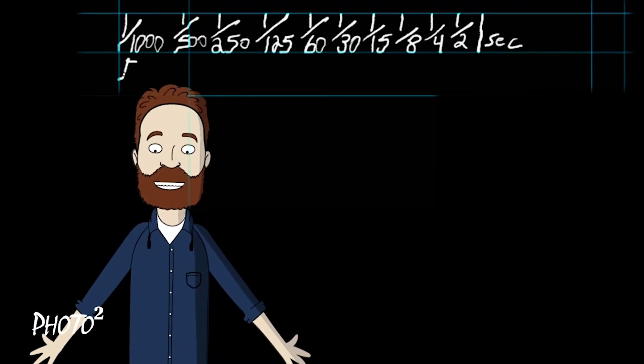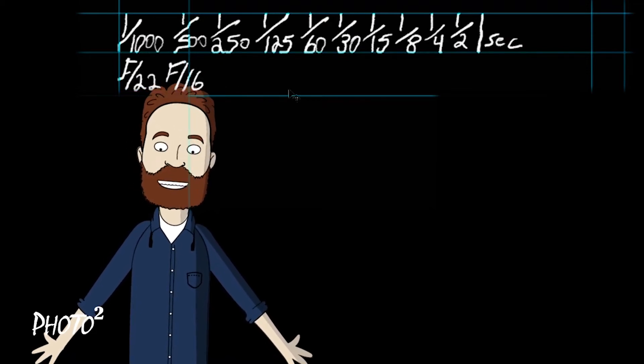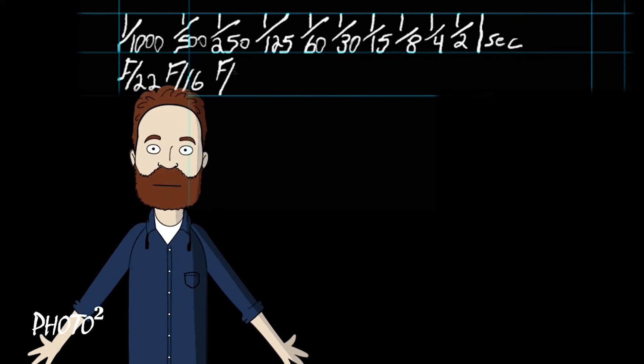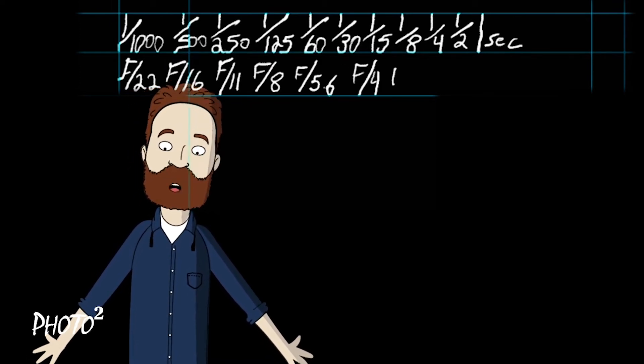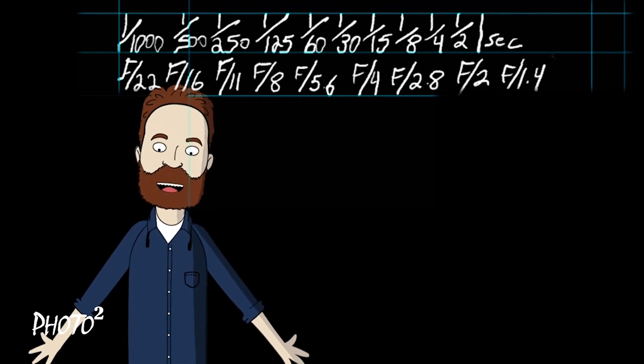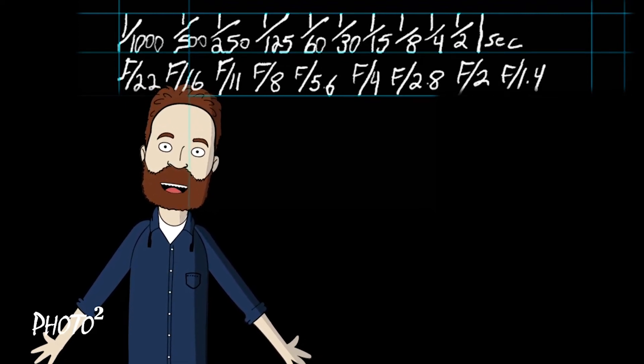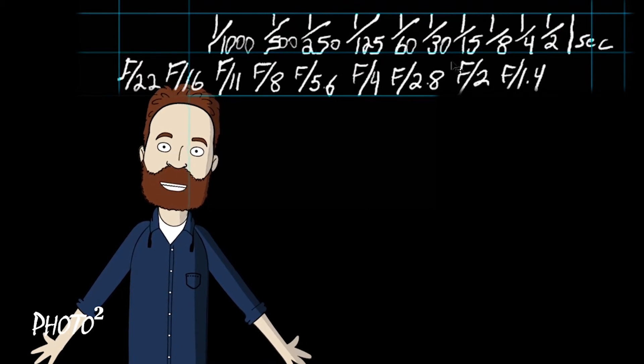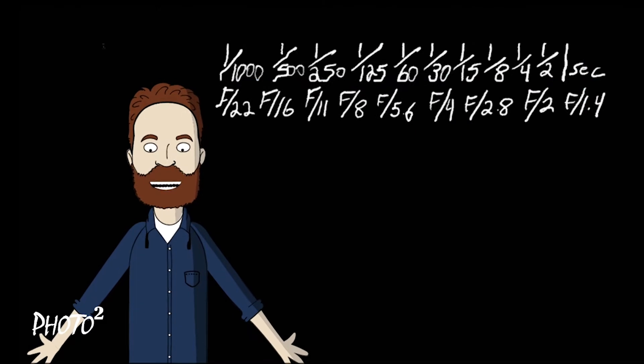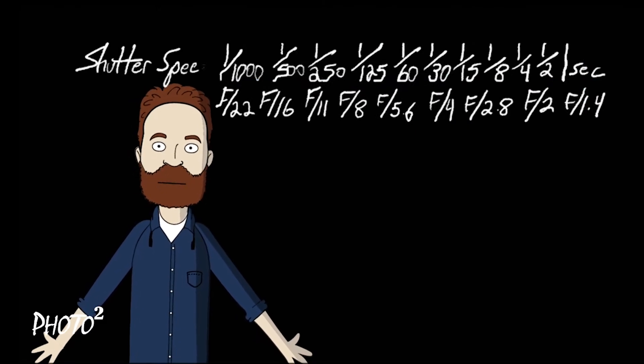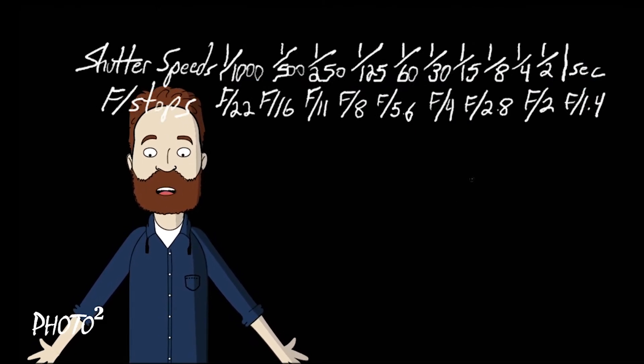Now f-stops, let's start at f/22, then it goes to f/16, then f/11, then f/8, then f/5.6, then f/4, f/2.8, f/2, and f/1.4. Now obviously some cameras will have, as I've mentioned, they'll go down to 30 seconds or up to an eight-thousandth of a second, but this is a standard scale. So again, the top one is the shutter speeds, the bottom one is f-stops.